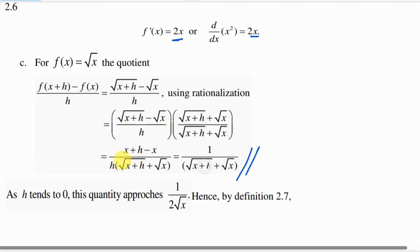So as h approaches zero, the result is: 1 over 2 times the square root of x. This is the result given by Definition 2.70.